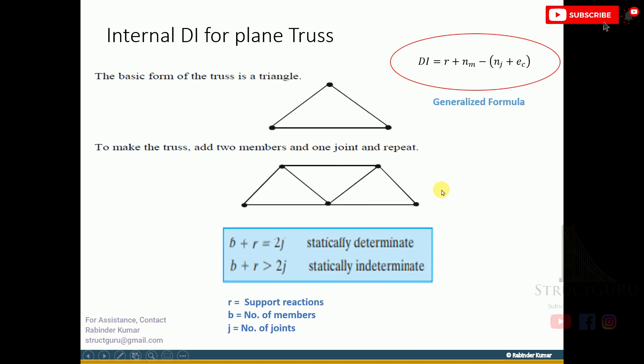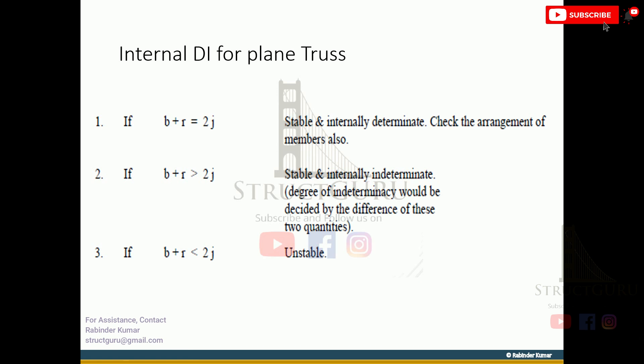Let's calculate the internal degree of indeterminacy for the plane truss. This is the generalized formula in order to calculate the degree of indeterminacy, and this is the specific formula for the plane truss members. Here is the criteria for truss members in order to signify the member as unstable, determinate, and internally indeterminate.